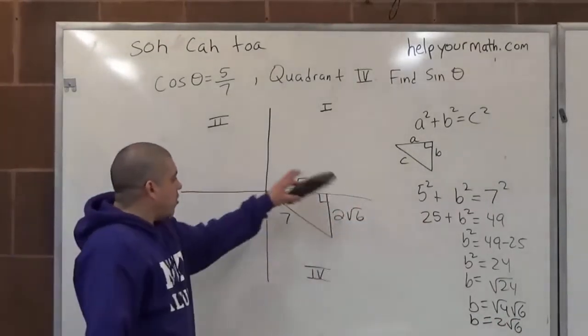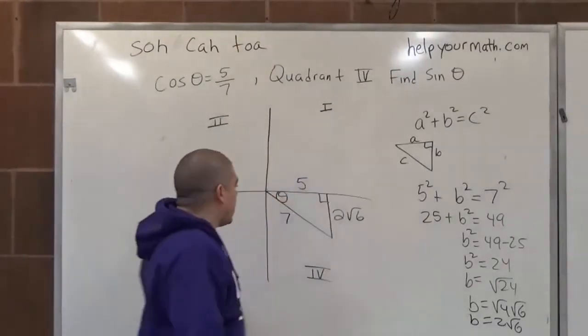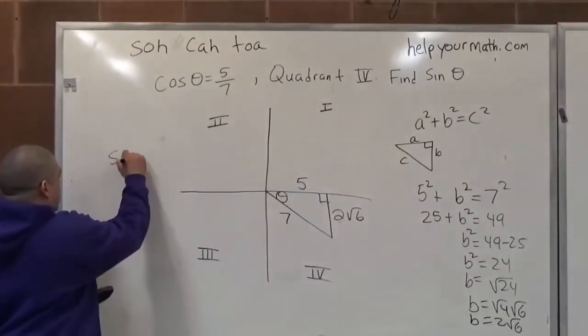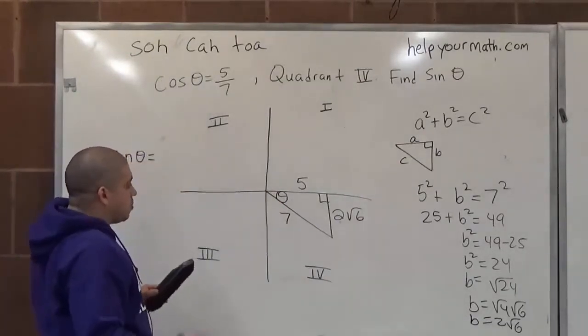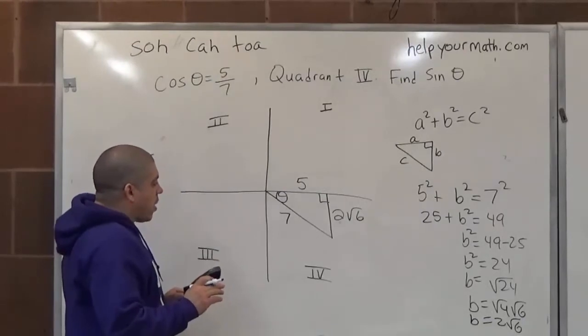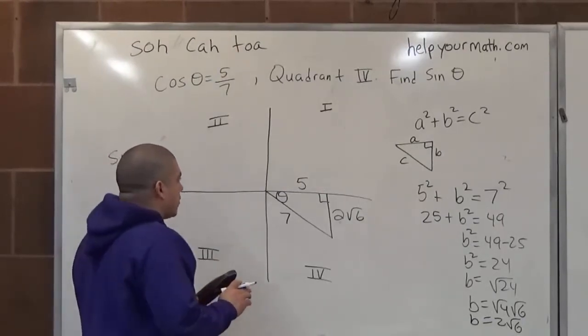Now we have all the sides of our triangle, and we're asked to find the sine of theta. Sine of theta is opposite over hypotenuse. But first, we should figure out if it's positive or negative.